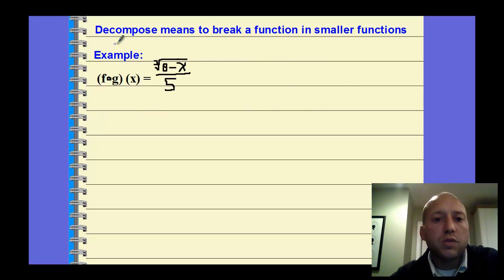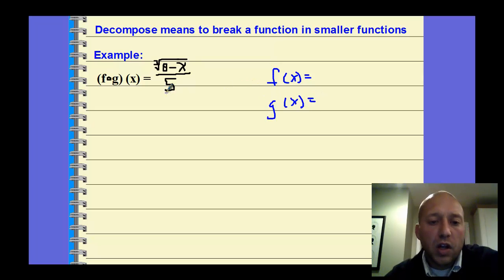Last thing: to decompose means to break a function into smaller functions. So this would be like f composed of g of x, and you're going to find possibilities for f(x) and g(x). For this, there's often more than one answer. When I look at it, I can look for what groups are in here. One possibility could be grouping the entire numerator, and then the fraction could be a second group.